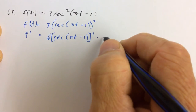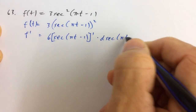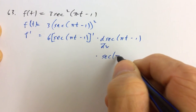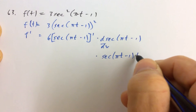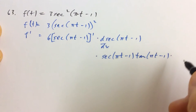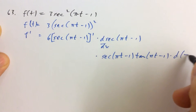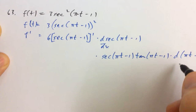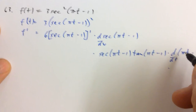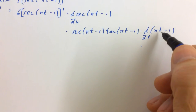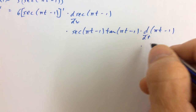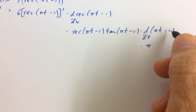And then we multiply by the derivative of the secant of whatever. We know that the derivative of the secant is secant tangent, so secant tangent of that same thing, multiplied by the derivative of the inside. The derivative of πt − 1 with respect to t — that's just a constant. The derivative of π times t is π, and the derivative of negative 1 is 0.